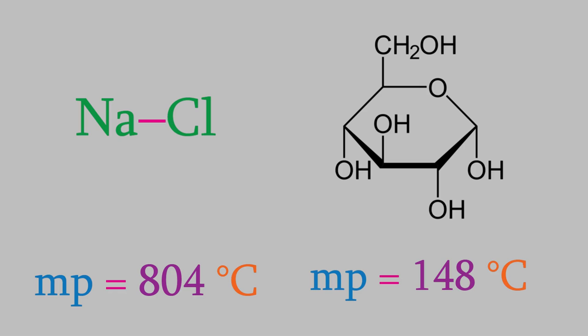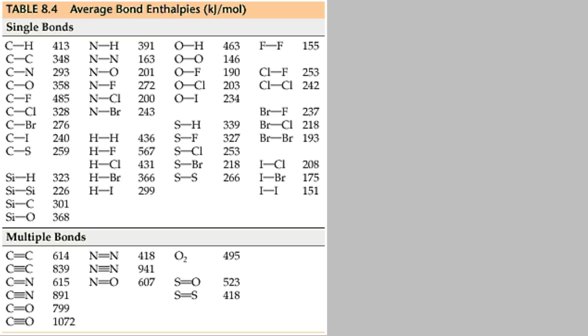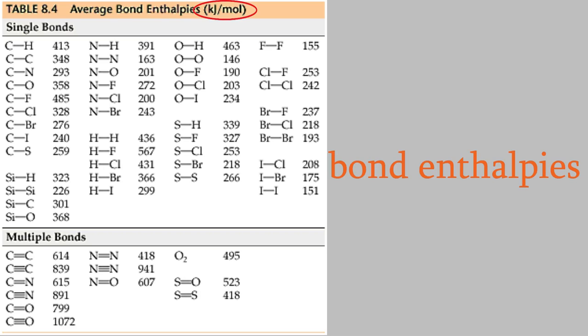We can also make predictions about the strengths of different covalent bonds. As you'd probably guess, triple bonds are much stronger than double bonds, and double bonds are stronger than single bonds. The strength of many different bonds is summarized in a table of bond enthalpies, with units of kilojoules per mol. For example, a carbon-carbon single bond has a much lower enthalpy than a carbon-carbon double bond, which in turn is lower than the enthalpy of a triple bond.